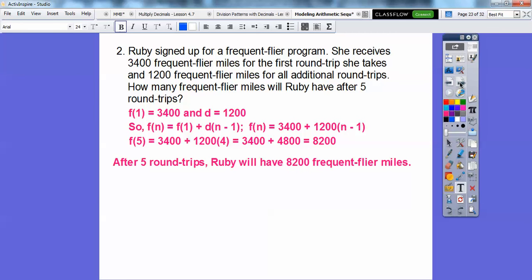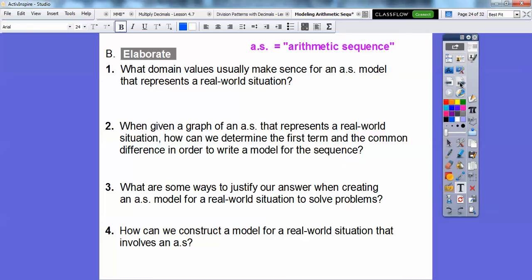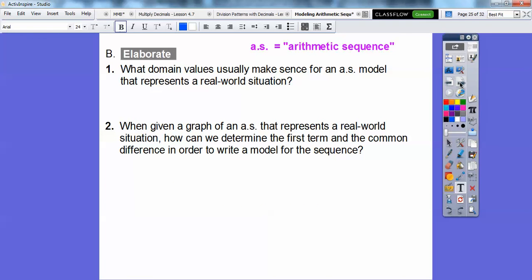So after five round trips, Ruby will have 8,200 FF miles. Alright, let's answer a few questions right here. Don't forget AS is arithmetic sequence. We'll just do the first two first, and we'll do the second two when we get down with this.